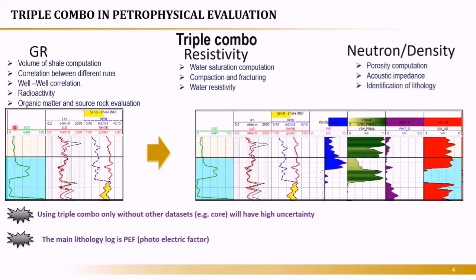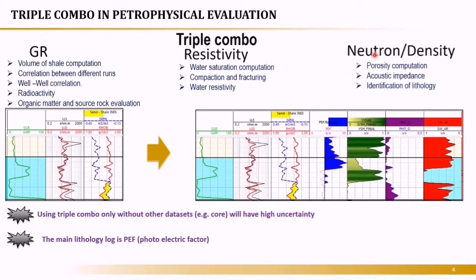Using this triple combo, we use gamma ray and neutron-density for volume of shale computation, neutron and density for porosity computation, and resistivity for saturation computation — giving us volume of shale, porosity, and water saturation. The PEF is the main lithology log; when asked what the lithology log is, your answer should be PEF. Gamma ray is the correlation log, resistivity is the fluid log, and neutron-density are the porosity logs.